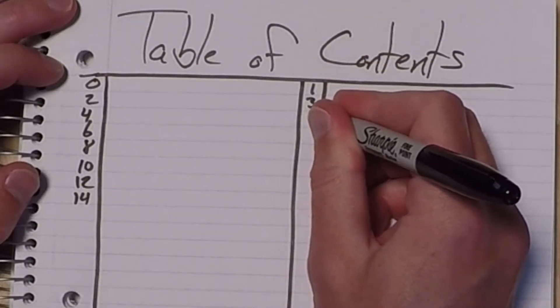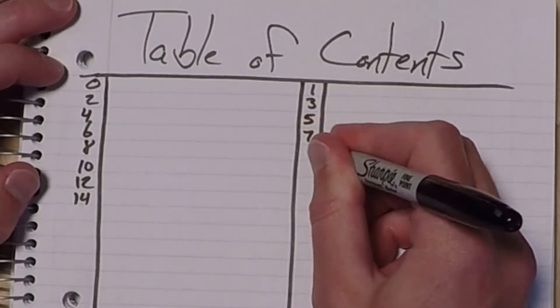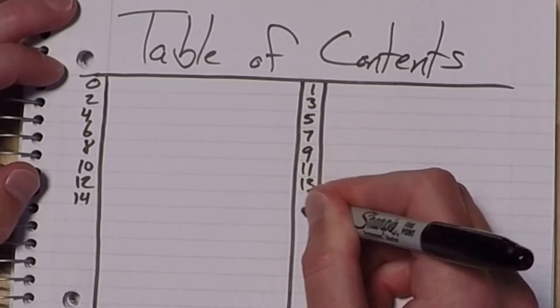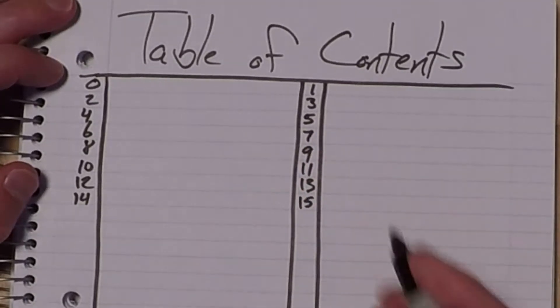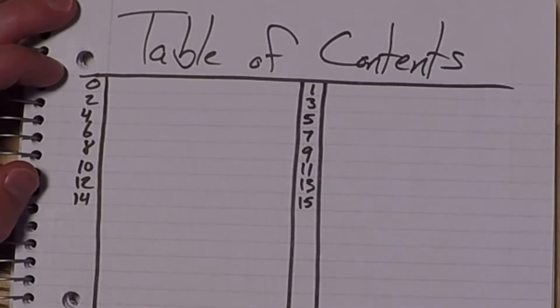And this will be three, one, three, five, seven, nine, eleven, thirteen, fifteen. So this will continue on all the way down until we're done with notes basically.